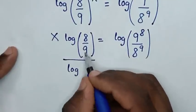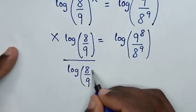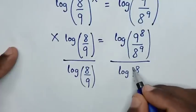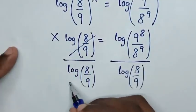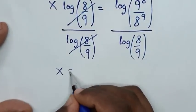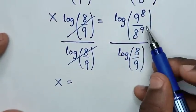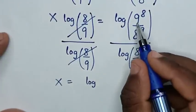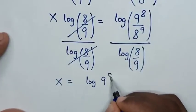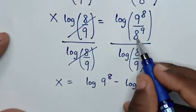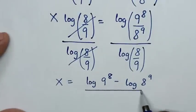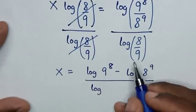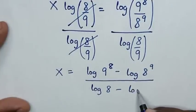Then, in the next step, we divide by log of (8 over 9) on both sides so as to find the value of x. This and this will cancel. Then our equation will be x is equal to log of (9 power of 8 over 8 power of 9), which is the same as log of 9 power of 8 minus log of 8 power of 9, over log of 8 minus log of 9.